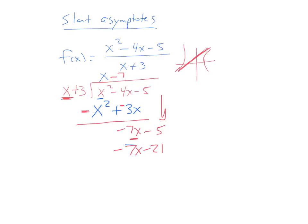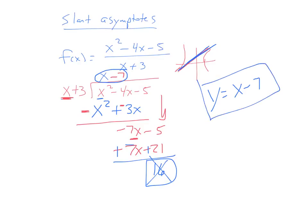We will change the signs, and now we will just add down. So negative 7x and positive 7x are gone. And a negative 5 plus 21 is 16. Now, once you get down to the remainder, that's it. We have this x minus 7 as our slanted line equation. So we would just say the equation of the slanted line is y equals x minus 7. The remainder is not relevant here to what we're trying to do and can just be forgotten about. So y equals x minus 7 is the slanted asymptote here.